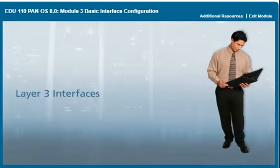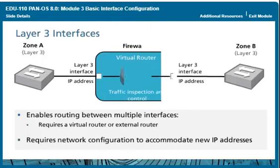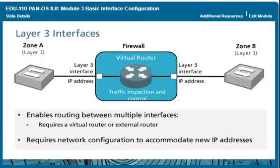Layer 3 Interfaces. A Layer 3 deployment enables routing traffic between multiple Layer 3 interfaces. You must assign an IP address to each Layer 3 interface, which may require network reconfiguration in your enterprise. Routing between Layer 3 interfaces requires a router — in the example, an internal virtual router provides a routable connection. The firewall can examine, traffic shape, and block traffic, and you can configure App-ID, Content-ID, User-ID, SSL decryption, NAT, and QoS in a Layer 3 deployment. A Layer 3 interface can also support firewall management traffic because it is assigned an IP address.